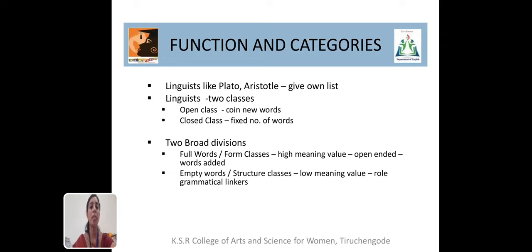Generally, the words in a language are broadly divided into two types: full words or empty words. Full words are otherwise known as form classes, which have a high meaning value. They are open-ended because every day we can add new words — for example, noun, adverb, adjective, and so on. Empty words are otherwise known as structural classes. They have only a low meaning value and play the role of grammatical linkers.